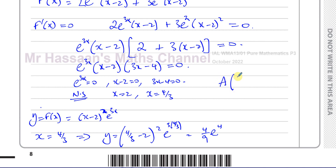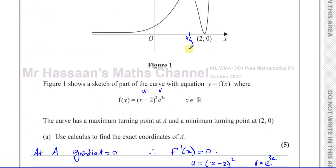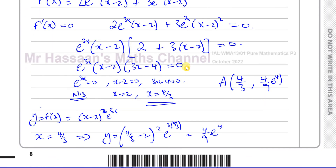So the coordinates of point A are (4/3, (4/9)e^4). That is the answer to question 3, part A. Now we move on to part B.